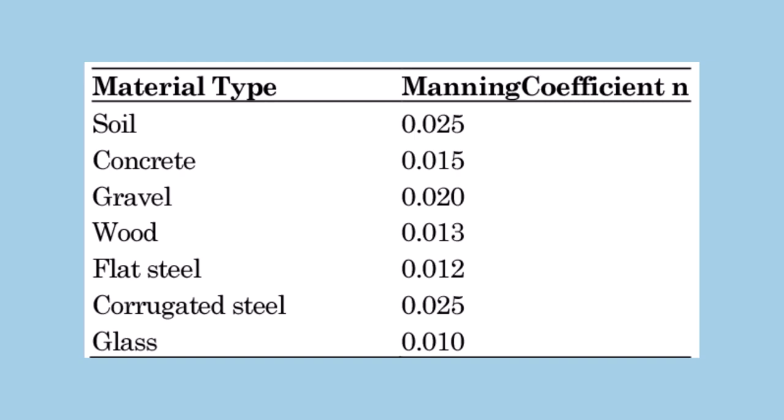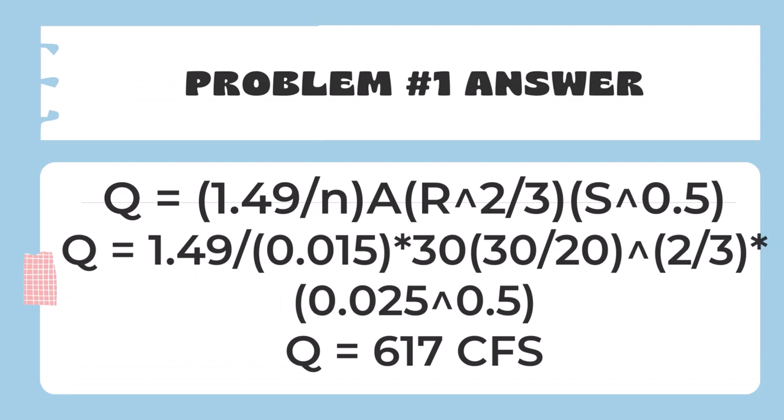Now we'll solve for the flow. We'll take 1.49, which is the Manning's coefficient for English units, divided by 0.015, which was n, times it by the area of 30, multiply that by 30 divided by 20, which represents R, the area over the wetted perimeter, raised to the two-thirds power, multiplied by 0.025, because if we take, remember the initial equation here, if we take 5 and divide it by 200, we'll get a value of 0.025, and so that'll be square rooted. So then the flow equals 617 CFS.